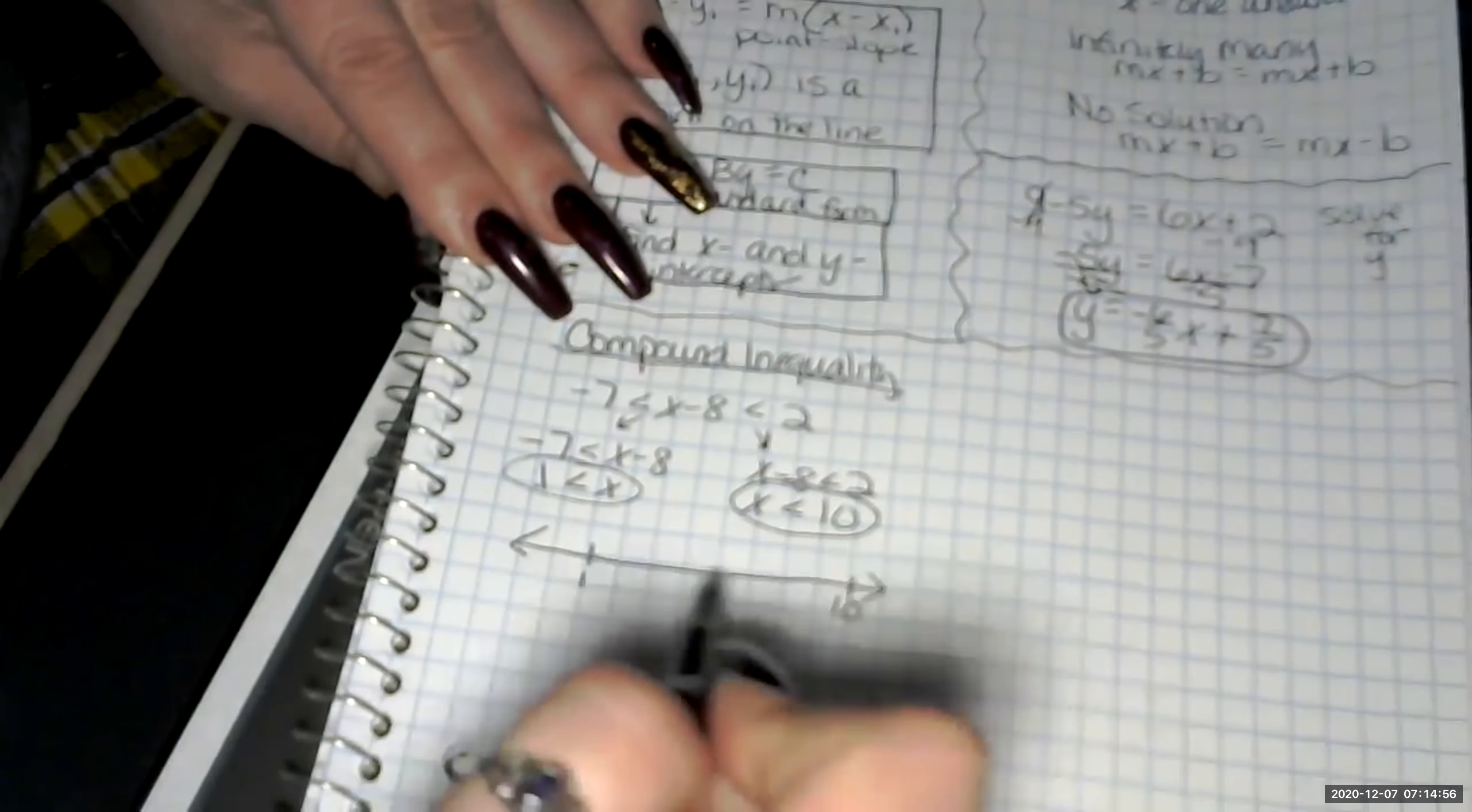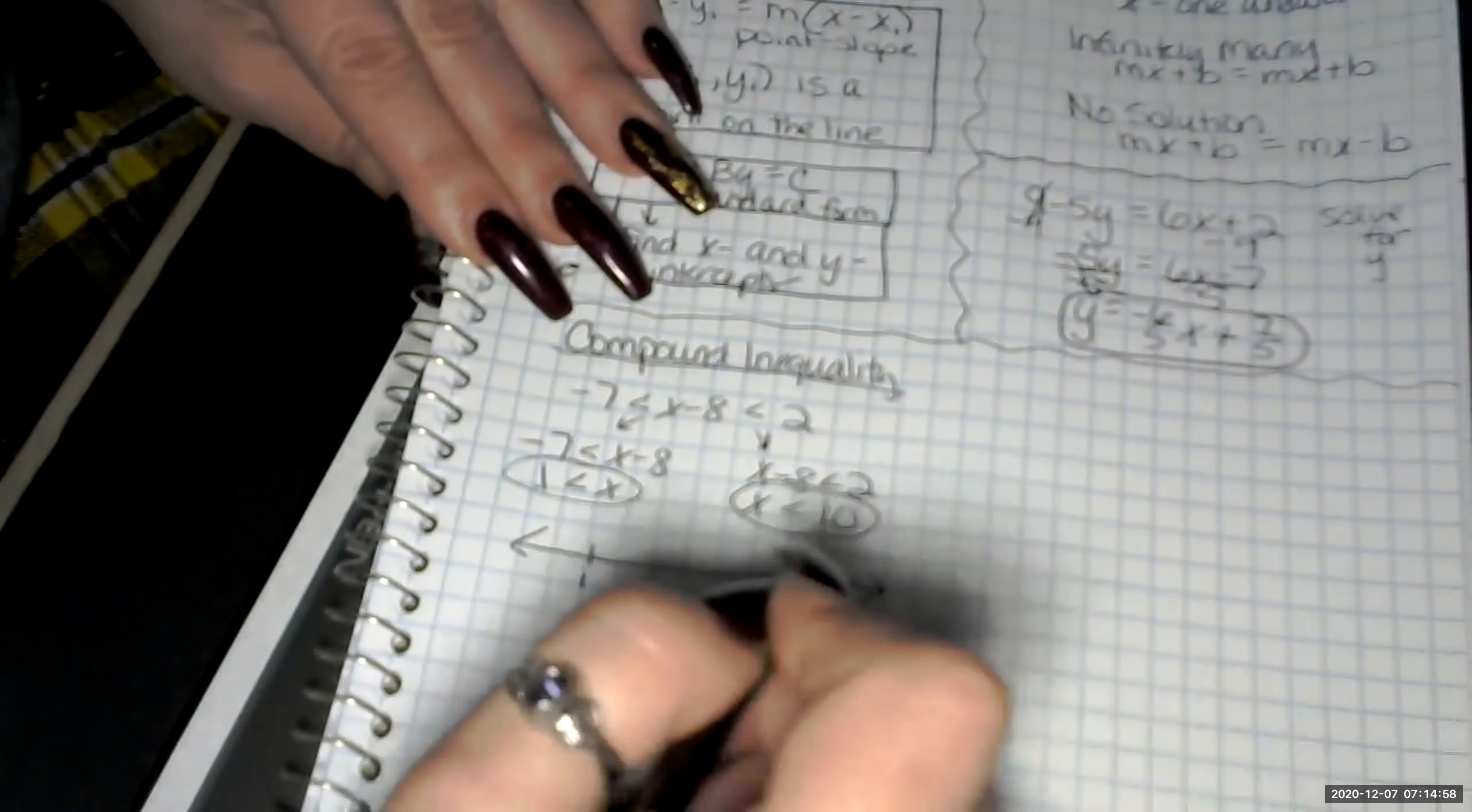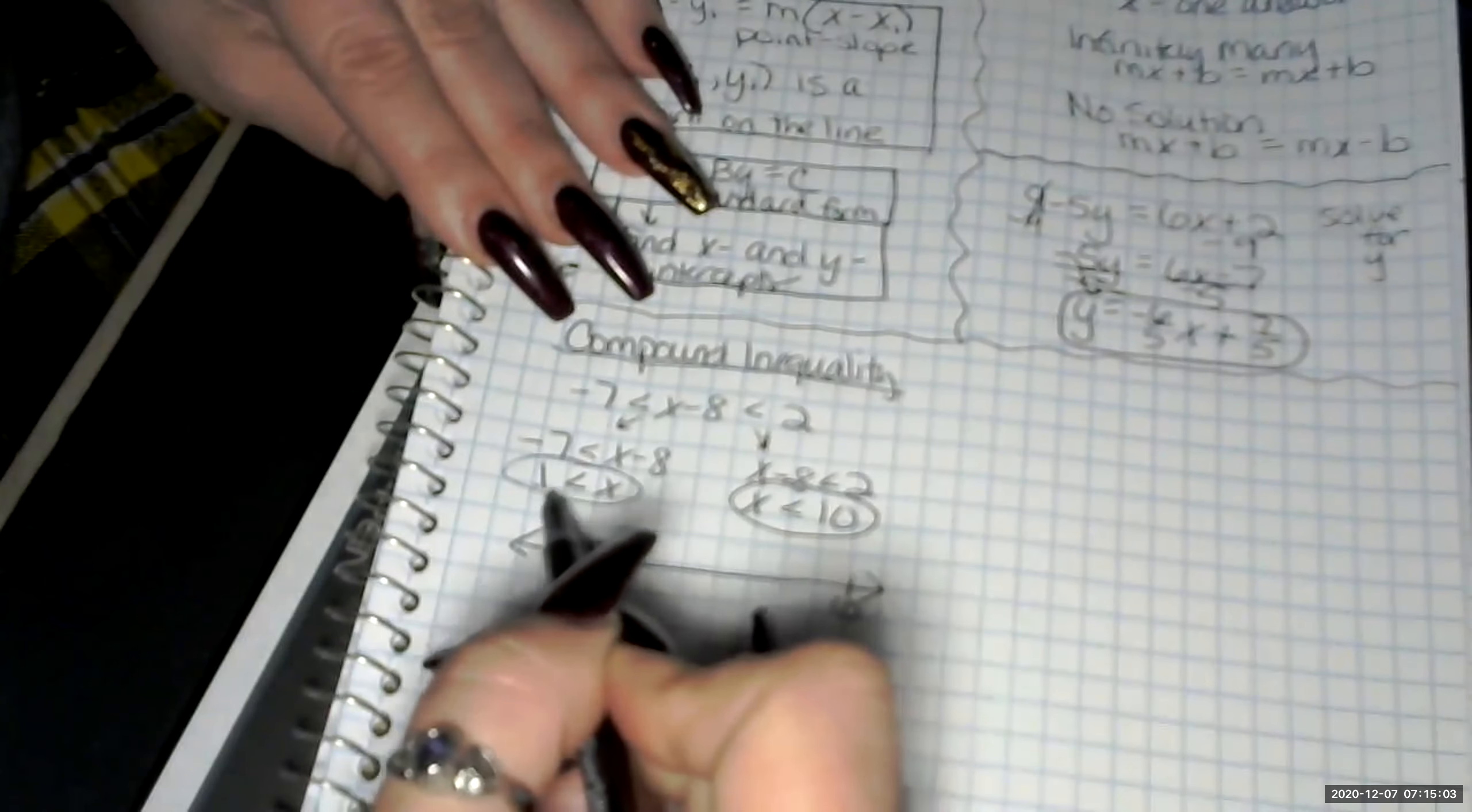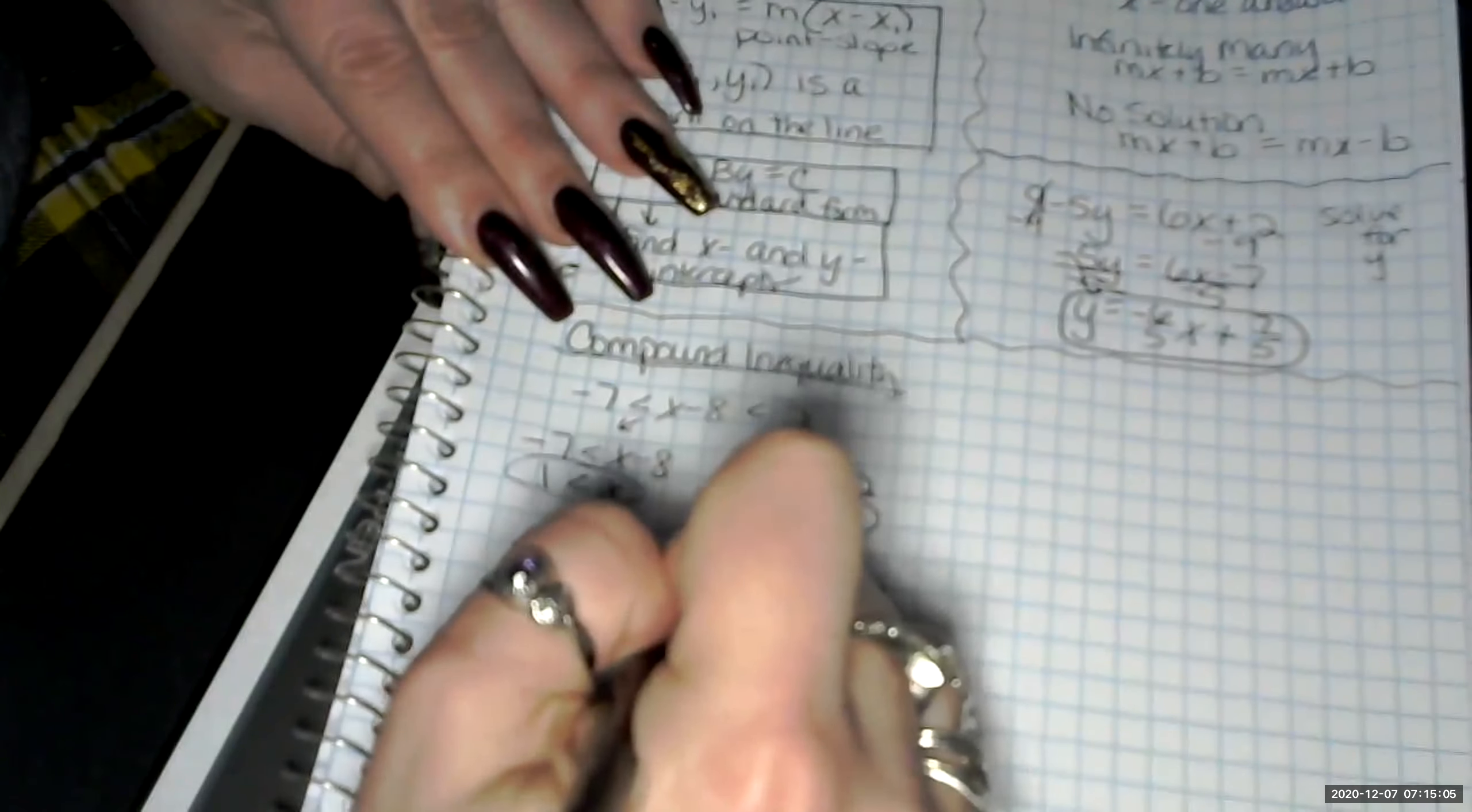So x is greater than 1, open circle, because it doesn't include the value 1. And we're shading this way.